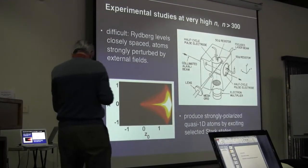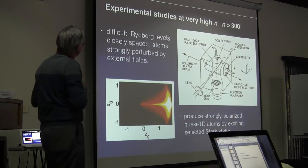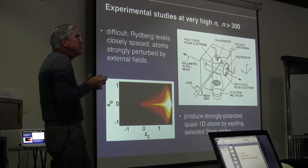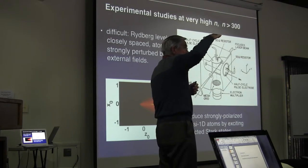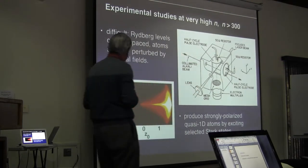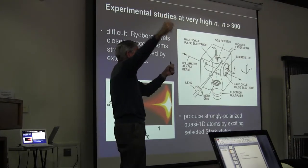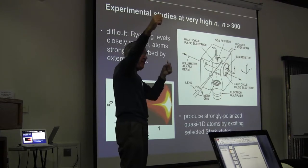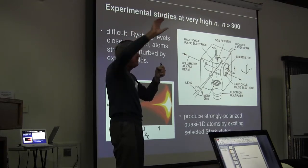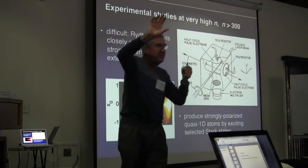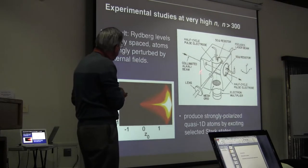Undertaking our experimental studies at very high n is a bit of a challenge. The Rydberg states are very closely spaced in energy, meaning you need lasers which are very stable and very narrow linewidth — we're talking about laser linewidths of megahertz to actually create these Rydberg levels. Also, the atoms are strongly perturbed by external fields: the electron is a long way from the nucleus, experiencing a very weak Coulomb field, so even a very small external field can significantly perturb its motion or even tear the atom apart.